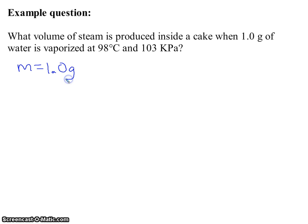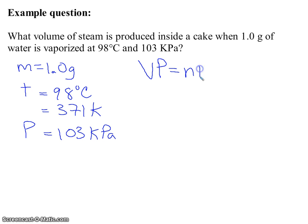I'll get myself organized. The temperature is 98 degrees Celsius, which equals 371K. Don't forget, I've got to change that to Kelvin. And the pressure is equal to 103 kilopascals. The question is asking for volume, so I have to get to moles first. The ideal gas law equation is VP equals nRT. The question is asking for V volume, so that's nRT over P.